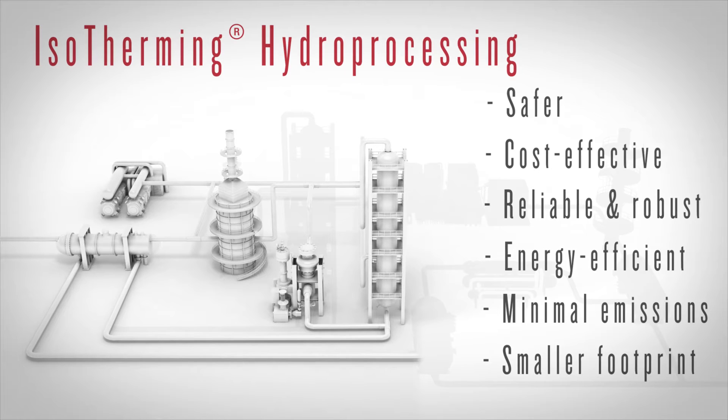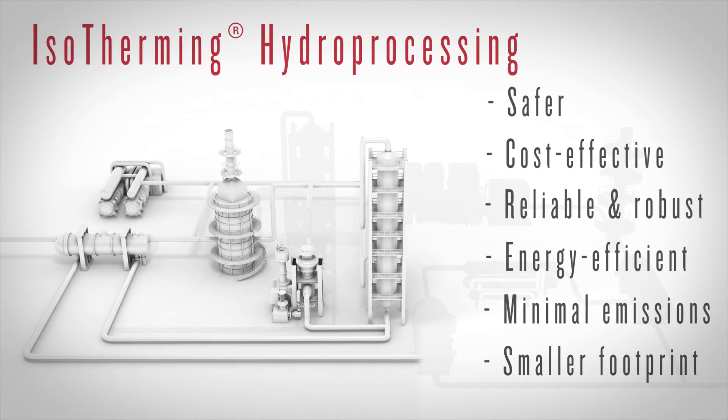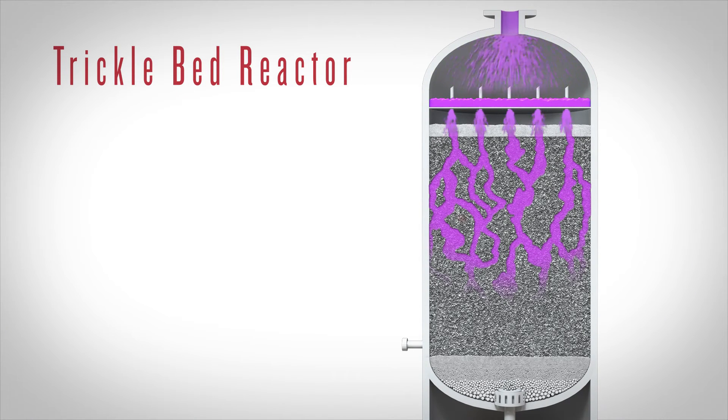Key to the efficiency of isotherming is what goes on in and around the reactor. An isotherming reactor is different from a trickle bed reactor in important ways.